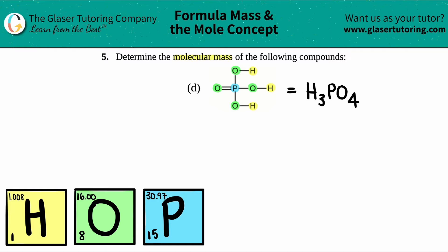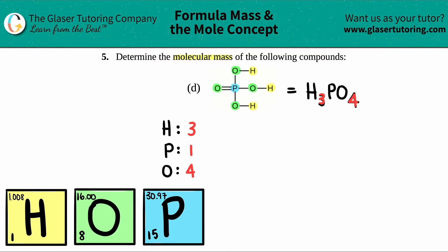For finding out the mass, it doesn't matter what order you put these in, as long as you have the right numbers. When finding mass, we list all the individual elements: hydrogen, phosphorus, and oxygen. We said there were three hydrogens, one phosphorus — you can put the one but technically you don't have to — and four oxygens.